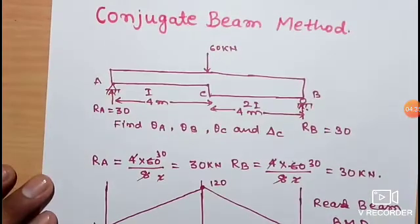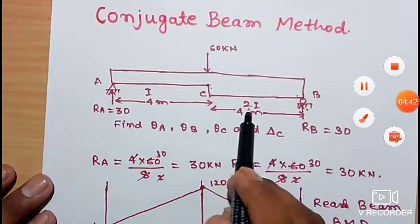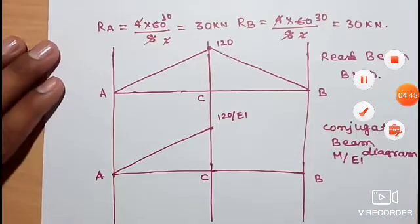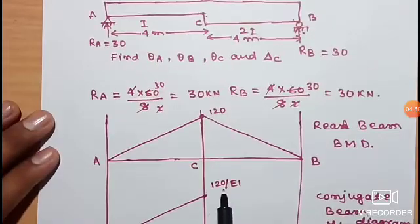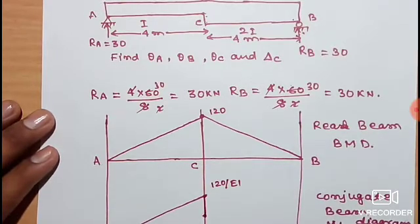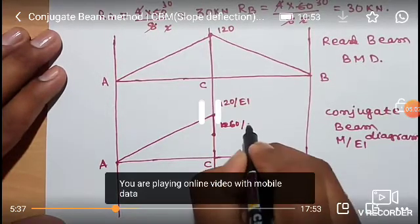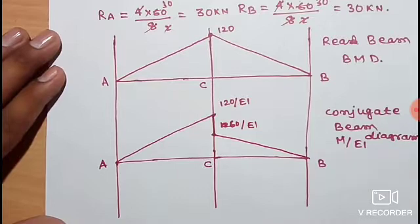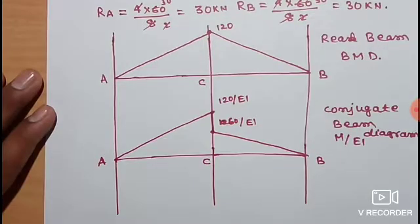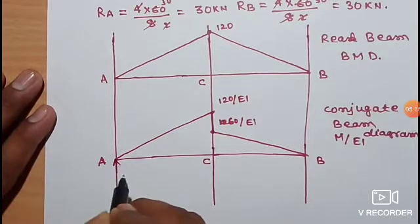From C to B, the moment of inertia is 2I. Therefore, the 120 is divided by 2I, giving 60 by EI. We join the M/EI values to form the conjugate beam M/EI diagram, with supports Ra-dash and Rb-dash.